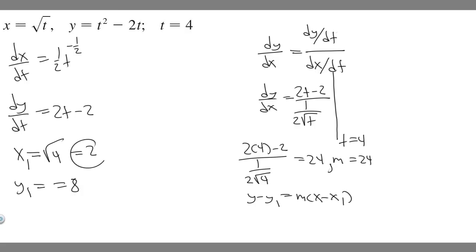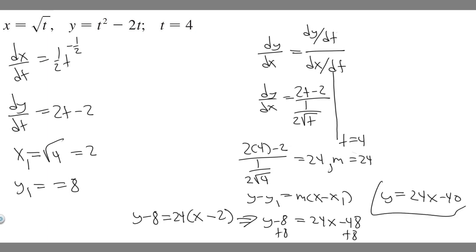Now we've got both points, x1 and y1. Now we can plug it in. y minus y1, which is 8, equals m, our slope, which is 24, multiplied by x minus x1, which is 2. Multiply this out: y minus 8 equals 24x minus 48. Add 8 to both sides, so y equals 24x minus 40. This is our equation of the line tangent to the curve at this point t. So 24x minus 40 is your answer.